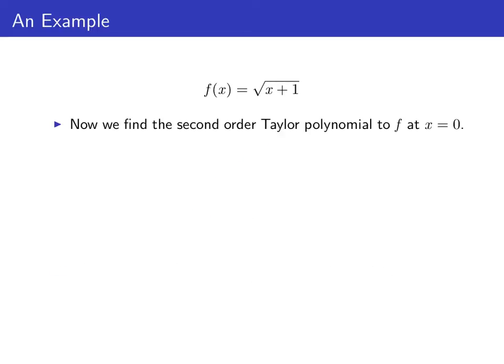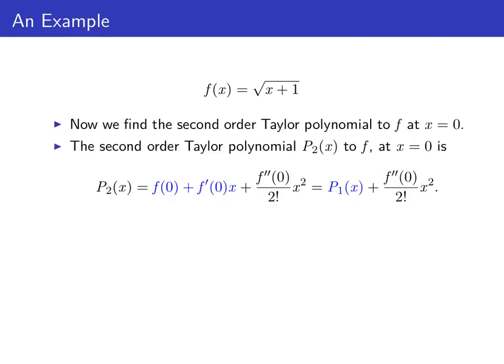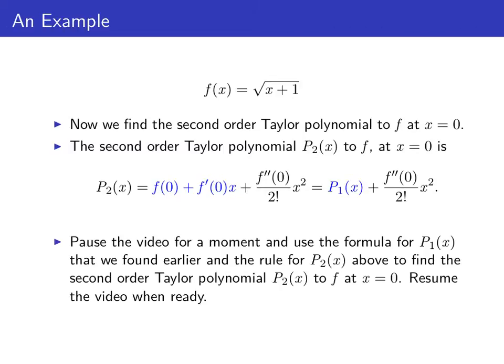Now we find the second order Taylor polynomial to f at x = 0. The second order Taylor polynomial p₂(x) is f(0) + f'(0)·x + f''(0) divided by two factorial times x squared. Notice that the terms f(0) + f'(0)·x give us just p₁(x), so p₂(x) is p₁(x) plus f''(0) over two factorial times x squared. We've already found p₁(x), so pause the video for a moment and find p₂(x), then resume when you're ready.